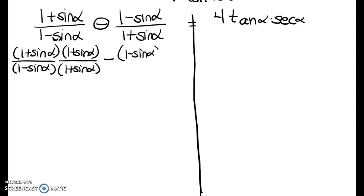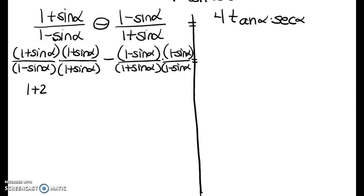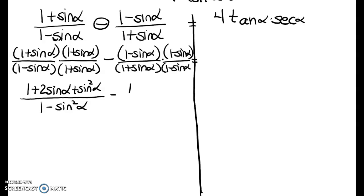So we have 1 minus sine of alpha over 1 plus sine alpha, times 1 minus sine alpha over 1 minus sine alpha. This is a lot like chapter 6. So I'm going to go ahead and multiply these out, and I get 1 plus 2 sine of alpha plus sine squared of alpha over 1 minus sine squared alpha, minus 1 minus 2 sine alpha plus sine squared alpha over 1 minus sine squared alpha.